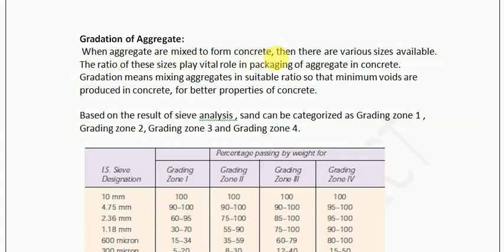When aggregates are mixed to form concrete, there are various sizes available. The ratio of these sizes plays a vital role in packing of aggregate in concrete. If I put only one size of aggregate in concrete, there will be too many air voids because there are no smaller aggregates available to fill the voids between them. This means gradation plays a very important role in the concrete's density and compaction, which is very important for strength. Gradation means mixing of aggregate in a suitable ratio so that minimum voids are produced in concrete for better properties. The better the gradation, the fewer air voids, the higher the density, and the higher the strength.